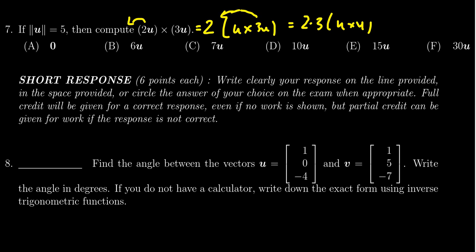And yes, 2 times 3 is 6, but one thing to remember about the cross product here is that the cross product of a vector with itself is always equal to 0, and so we end up with 6 times the 0 vector.